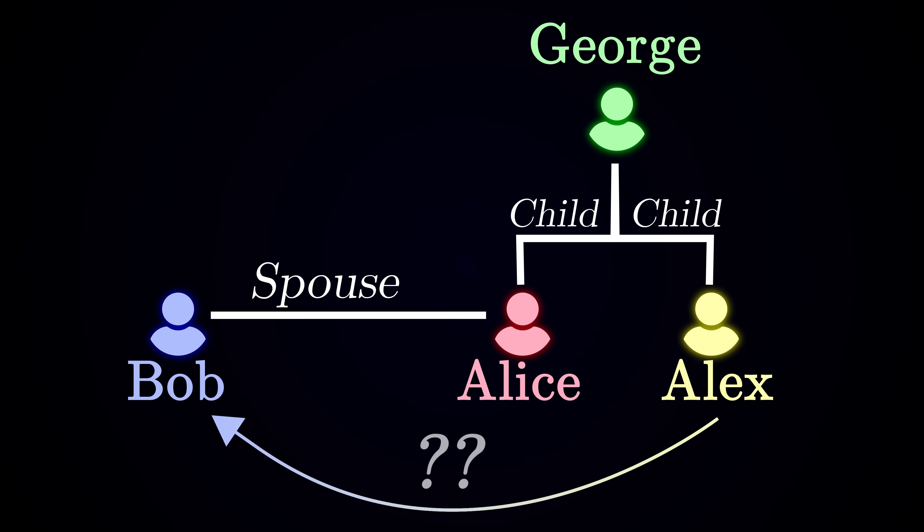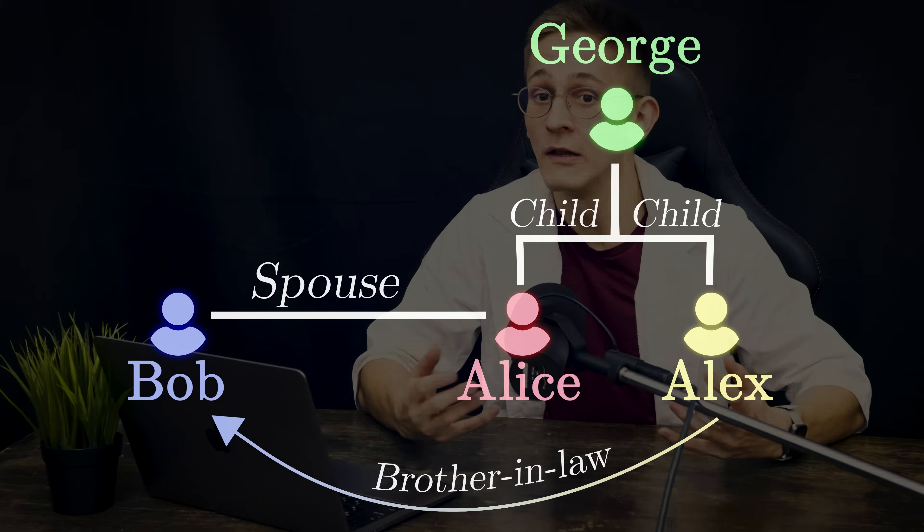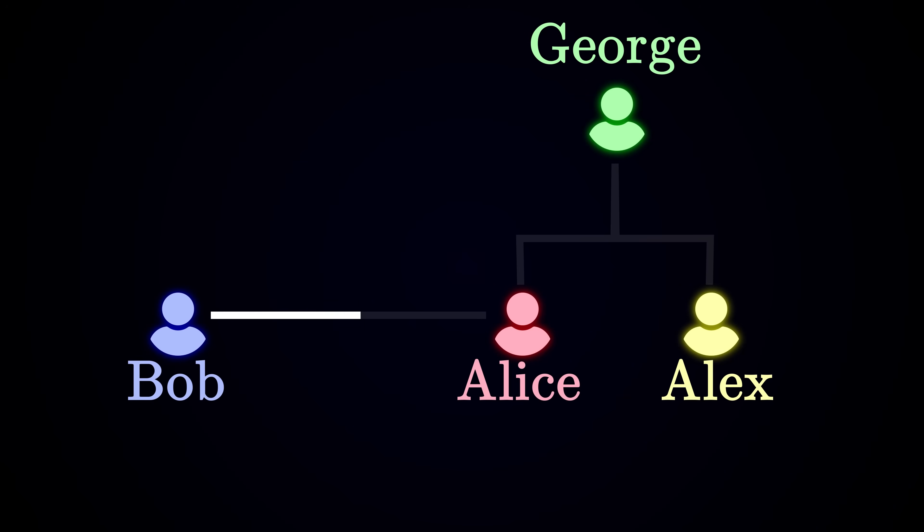You may have successfully identified that Alex is Bob's brother-in-law, but can you tell me exactly how you did it? Well, I think you'll agree that it's really tough to explain the concrete logic behind the solution. You just sort of mentally walked along this tree of relations from Bob to Alex and then returned back to Bob using the shortest path which you identified as being the brother-in-law.